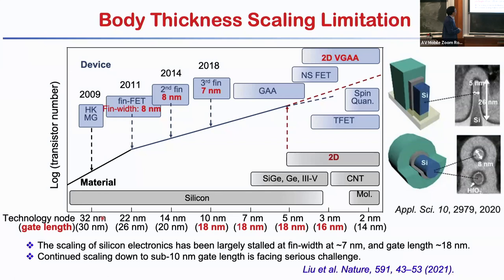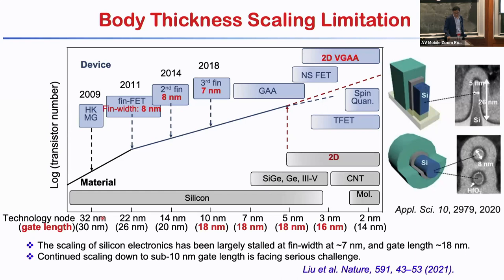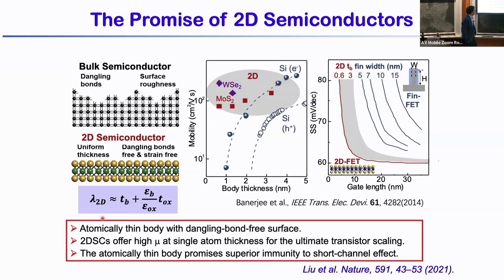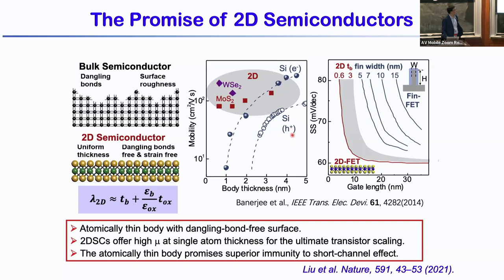Looking at the channel body thickness, it's almost limited to around 6 to 7 nanometers and very difficult to scale further. Size confinement seriously compromises the electronic properties. In this regard, 2D semiconductors can offer exciting opportunities. If we look at silicon mobility as a function of thickness, it starts to degrade rapidly below 5 nanometers. On the other hand, for 2D materials, their mobility can be largely maintained down to sub-nanometer regimes. With such a thin channel, we can make much shorter channel transistors while still retaining good switchability.